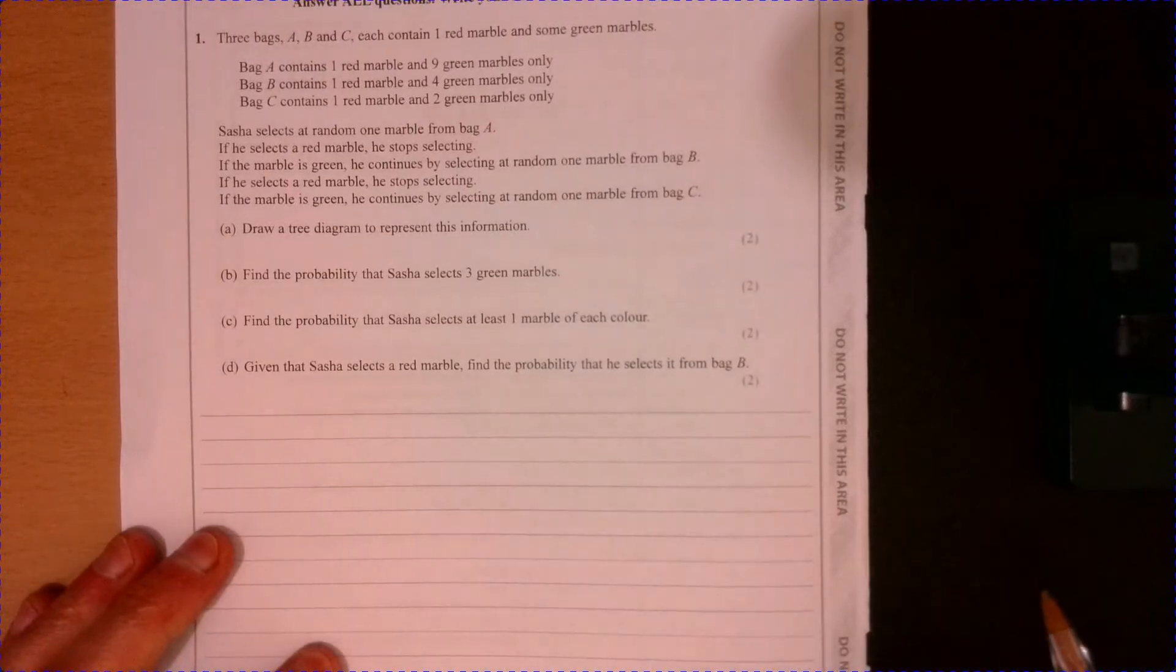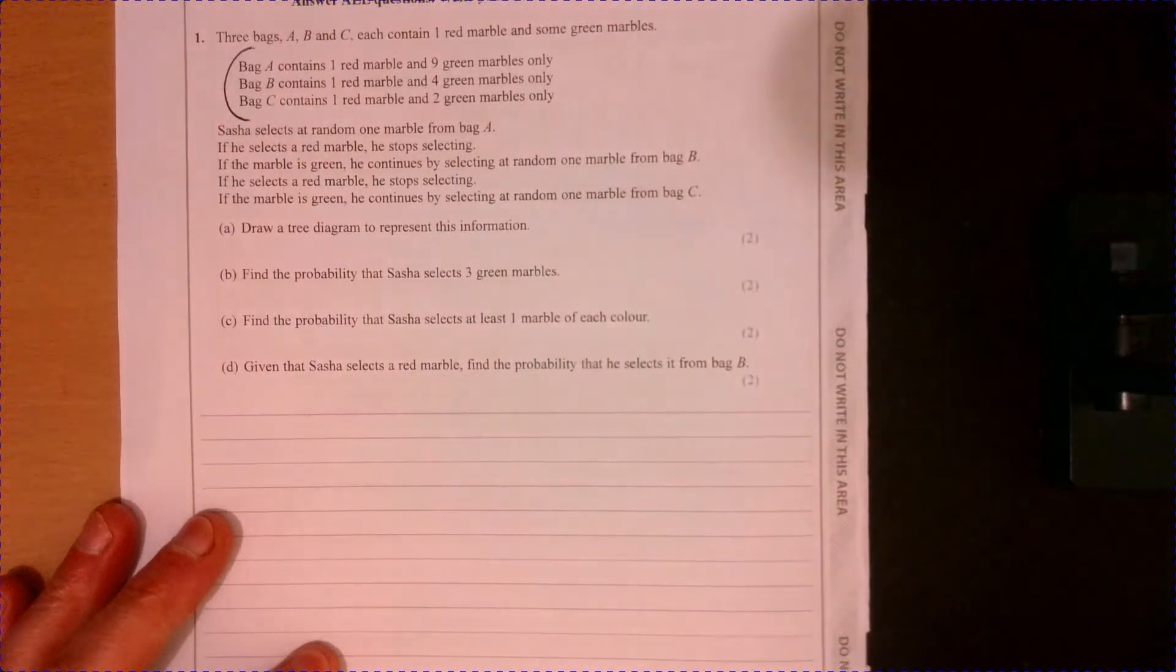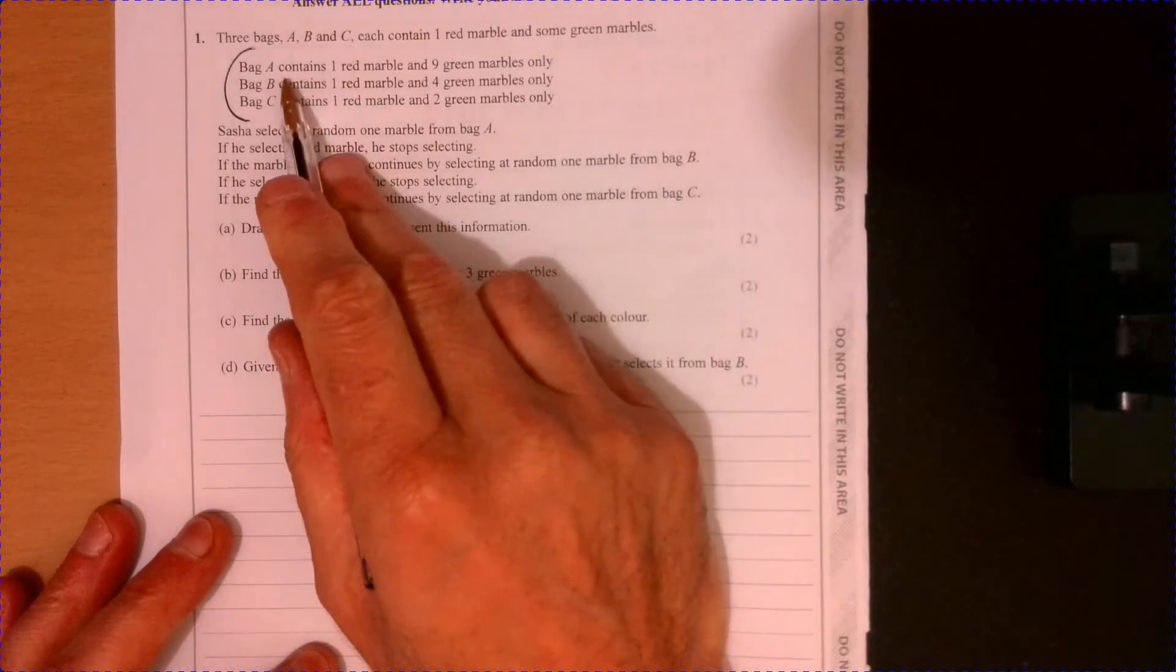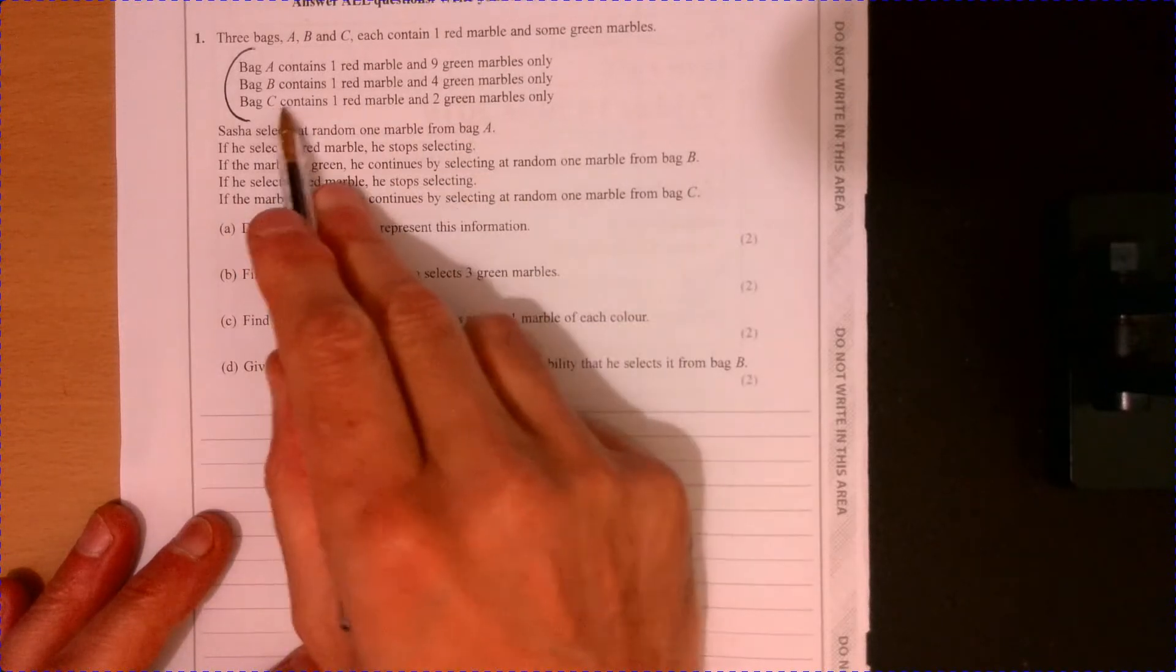Question one. Let's start off by just summarizing what's here. So we've got one red, nine green. That's bag A. Bag B, bag C.